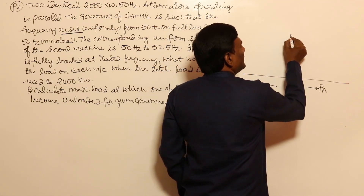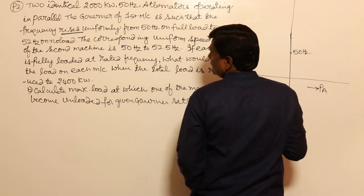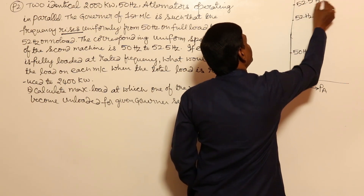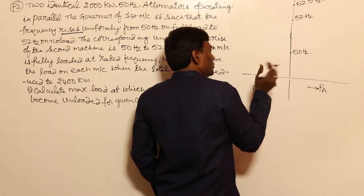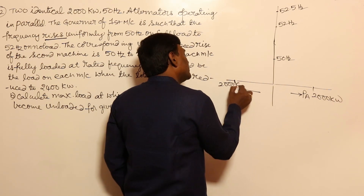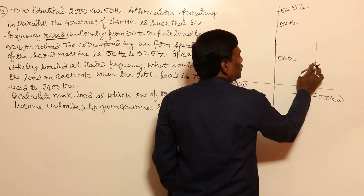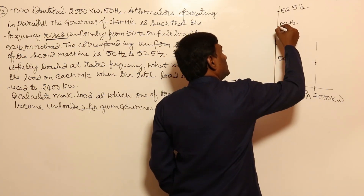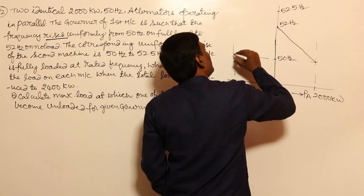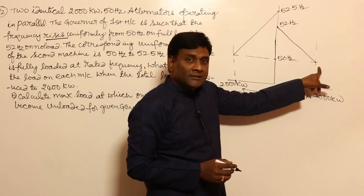So for the first machine, the frequency goes from 50 Hz to 52 Hz, and for the second machine from 50 Hz to 52.5 Hz. In both cases the rated capacity is 2000 kilowatt. At full load both machines operate at 50 Hz. As output power is reduced, frequency rises — to 52 Hz for the first machine and to 52.5 Hz for the second machine.